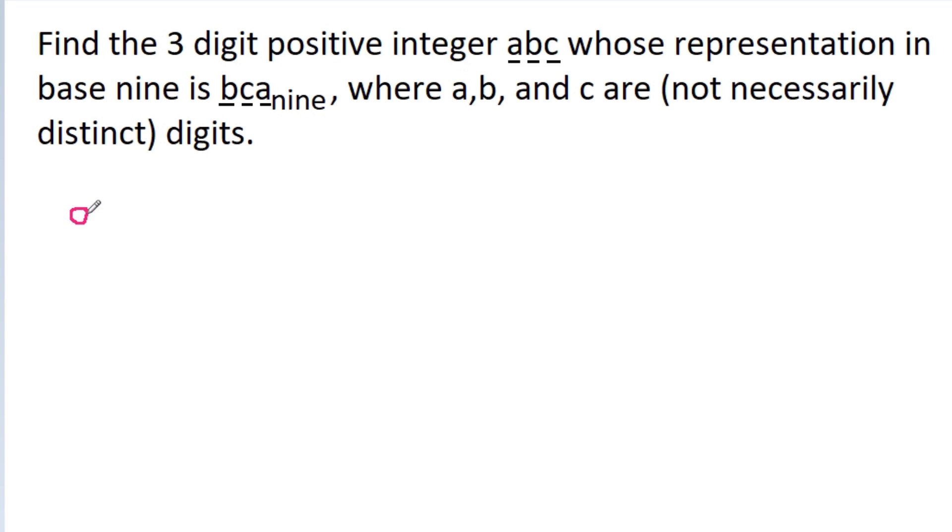Any number abc will be equal to 100a + 10b + c, and in base 9 representation bca₉, it will be equal to 9² times b, that is 81b + 9c + a.